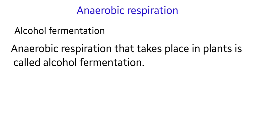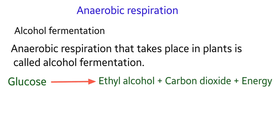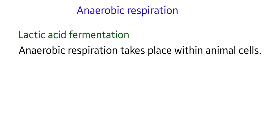Anaerobic respiration breaks glucose into intermediate substances such as lactic acid or alcohol, releasing less energy than aerobic respiration. Bacteria and yeast respire anaerobically; these organisms obtain most of their energy by a form of anaerobic respiration called fermentation. Anaerobic respiration in plants is called alcohol fermentation, during which carbon dioxide and ethyl alcohol are produced. The anaerobic respiration that takes place within animal cells is called lactic acid fermentation.